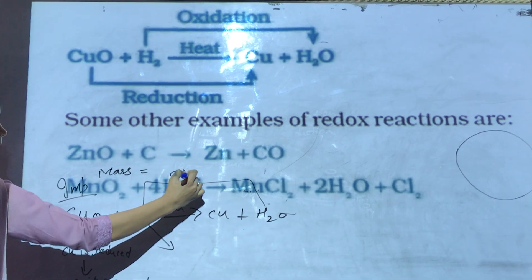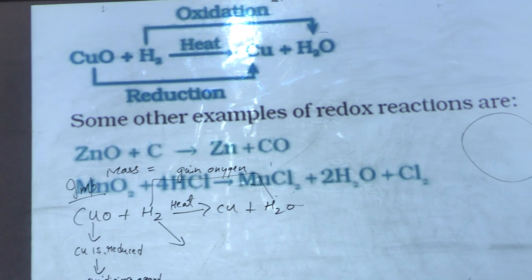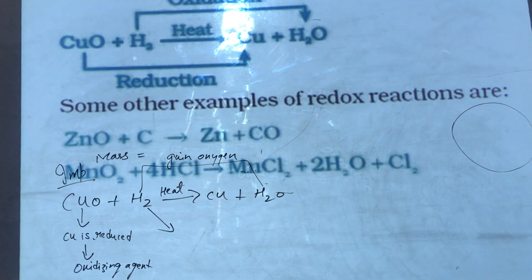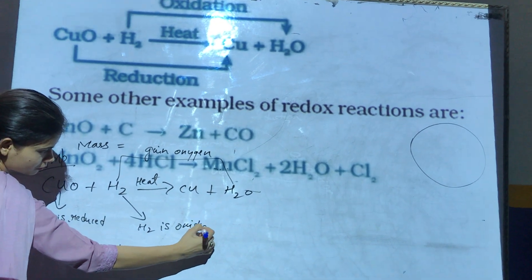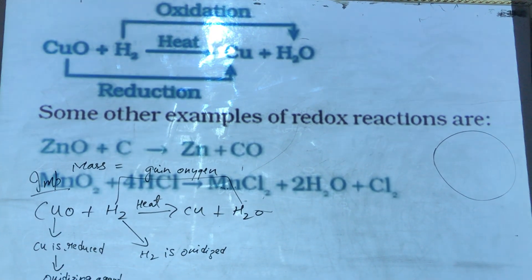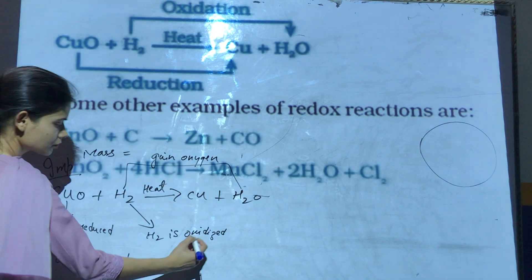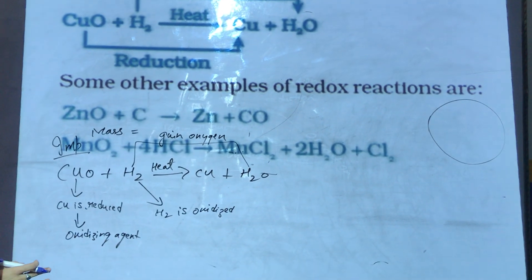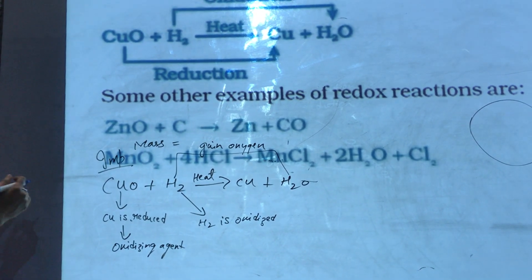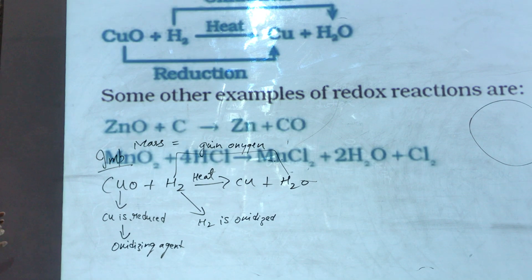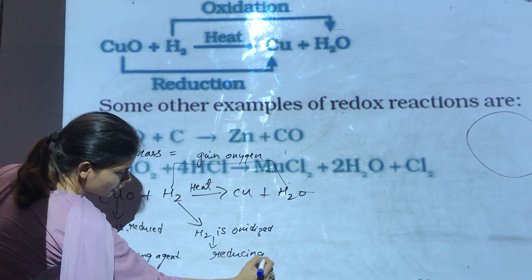Hydrogen has gained oxygen. Since it has gained oxygen, we will say that H₂ is oxidized. Now since it is oxidized, it means that it has given hydrogen for reduction. That is the reason why we will call H₂ the reducing agent.